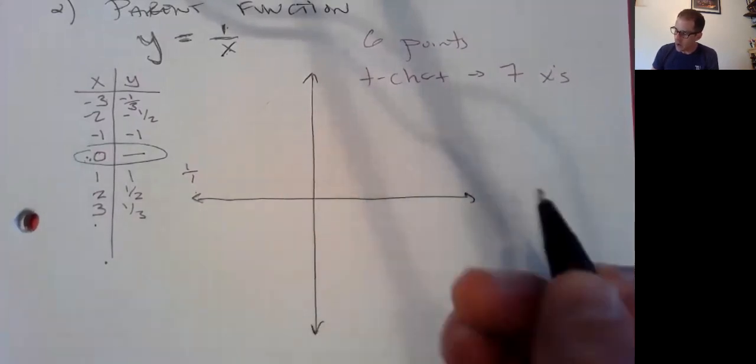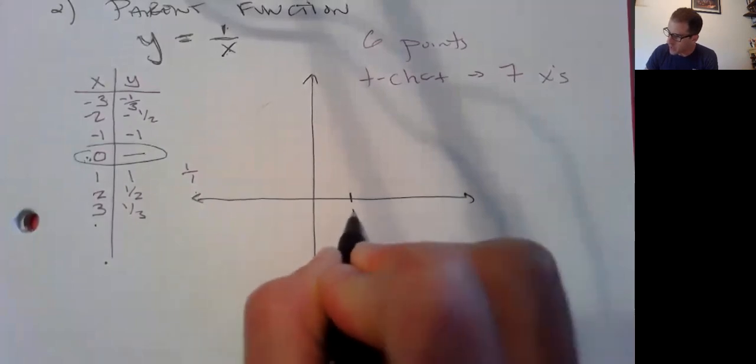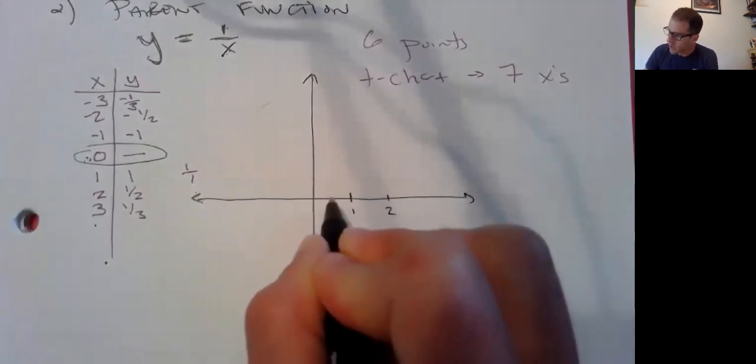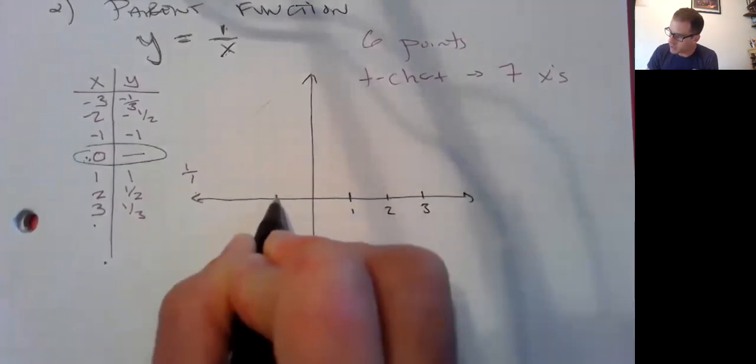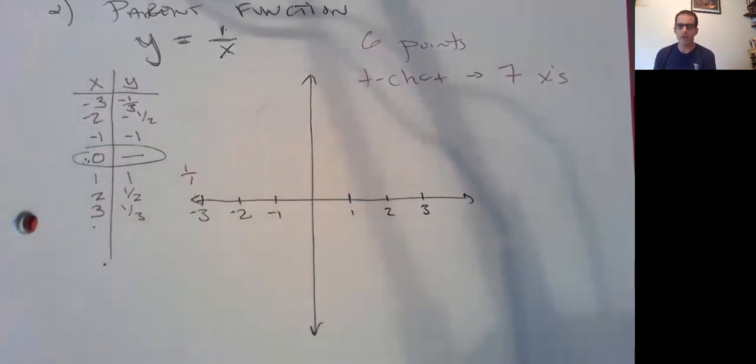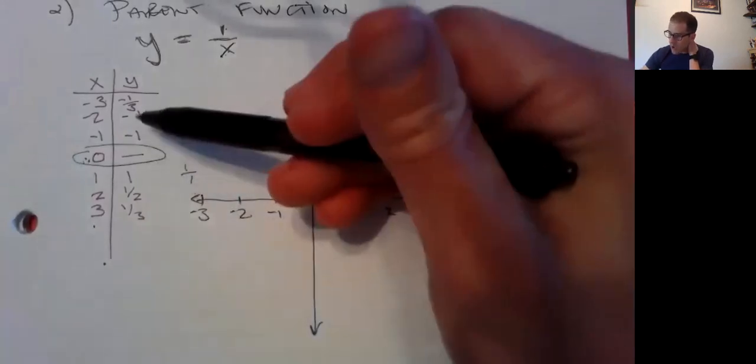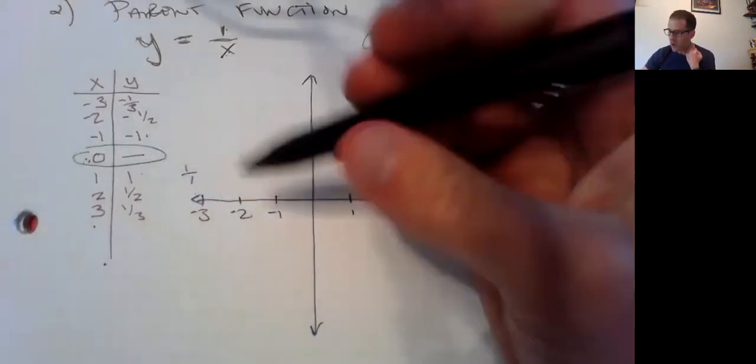All right, so we know our x's are going by. I actually spaced it out for you. One, skip two boxes, two, skip two boxes, three, which means I have to go over here and skip two boxes for each integer there.